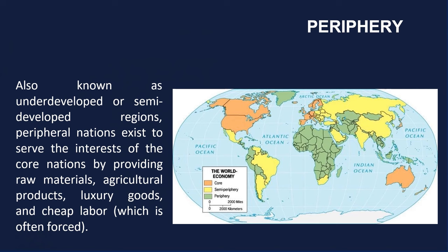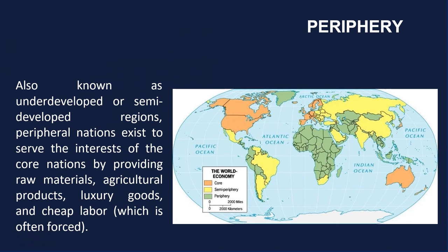Peripheral countries are often colloquially termed as underdeveloped or semi-developed regions. The peripheral nations exist to serve the interests of the core nations by providing raw materials in the form of minerals, agricultural crops or products, luxury goods, and also as the source of cheap labor, which is often characterized as being forced.